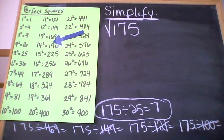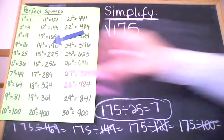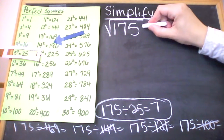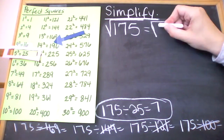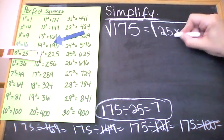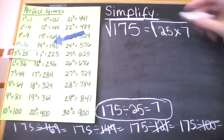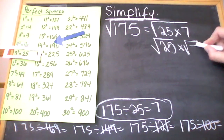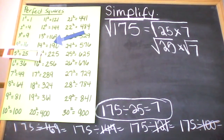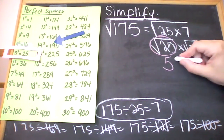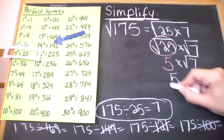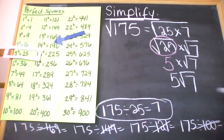So now I know which of those perfect squares is the biggest one that's a factor of 175. I'm going to factor 175 as 25 times 7. Now I'm going to use my product property of square roots and write this as the square root of 25 times the square root of 7. Next step, evaluate your perfect square: the square root of 25 is 5, because 5 times 5 is 25. Bring down the square root of 7. Our last step is to take out the multiplication symbol. So we have 5 times the square root of 7, and this is your answer.